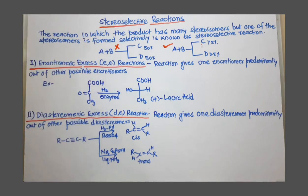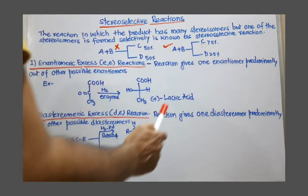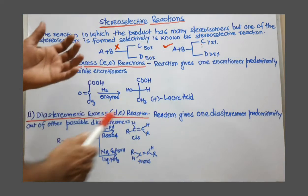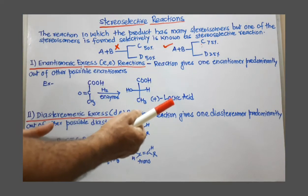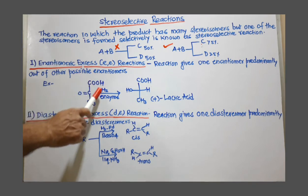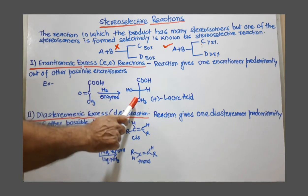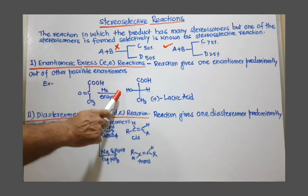Very simple, as the name indicates. The reaction in which only one enantiomer is predominantly formed out of other possible enantiomers. Then that reaction is called enantiomeric excess reaction. For example, this pyruvic acid, this biochemical reaction, pyruvic acid is converted to lactic acid in presence of enzyme.